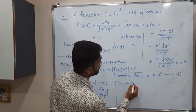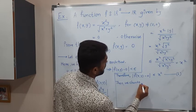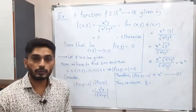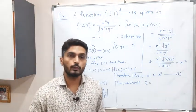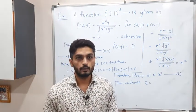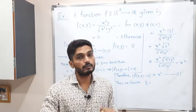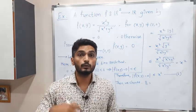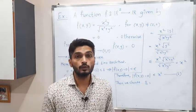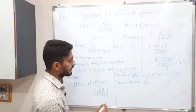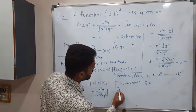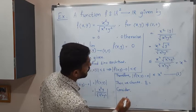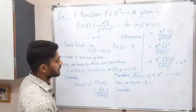Now our task is to find delta. We choose delta equal to — we don't know the exact value yet, so I will keep it blank and go further. After solving a few more steps we will come to know the required value of delta.